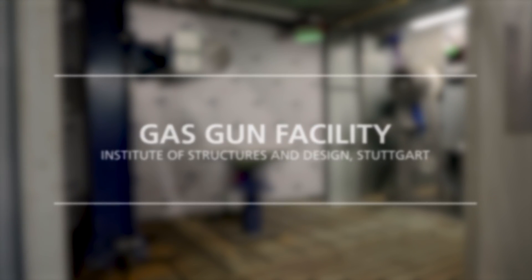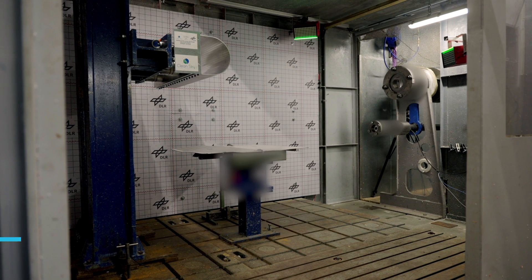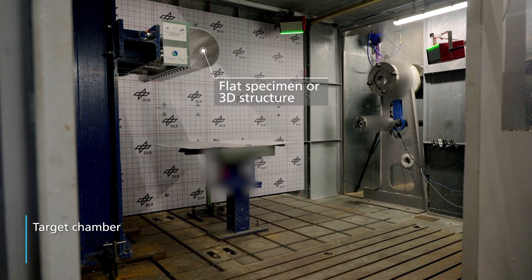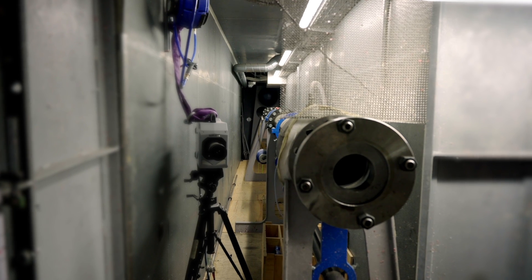To conduct high-velocity impact tests, the Institute of Structures and Design operates three gas guns, which are powered by either compressed air or helium gas.